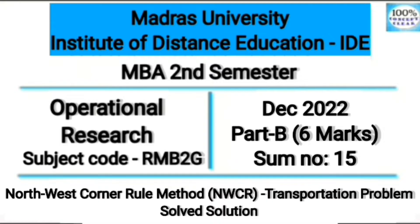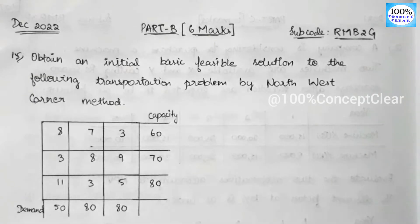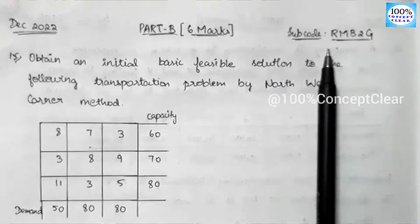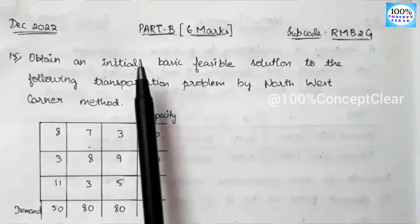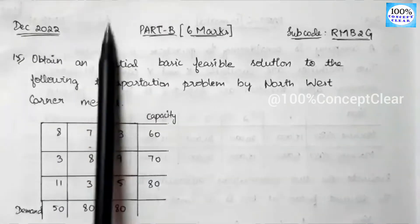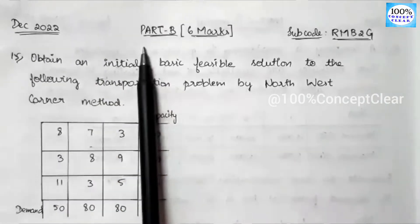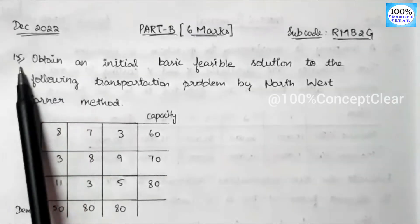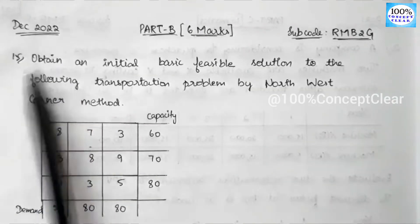In this video, we are going to solve a previous year question paper in the second semester of Madras University. We have an Operational Research subject, subject code RMB2G. We will have a December 2022 question paper, Part B, that is a 6-mark sum — number 15.